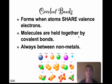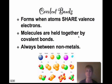Covalent bonds form when atoms share valence electrons. They're not transferring an electron from one to another, but sharing it — both atoms are holding on to that electron. Covalent bonds always occur between nonmetals, like hydrogen and oxygen, which are both nonmetals.